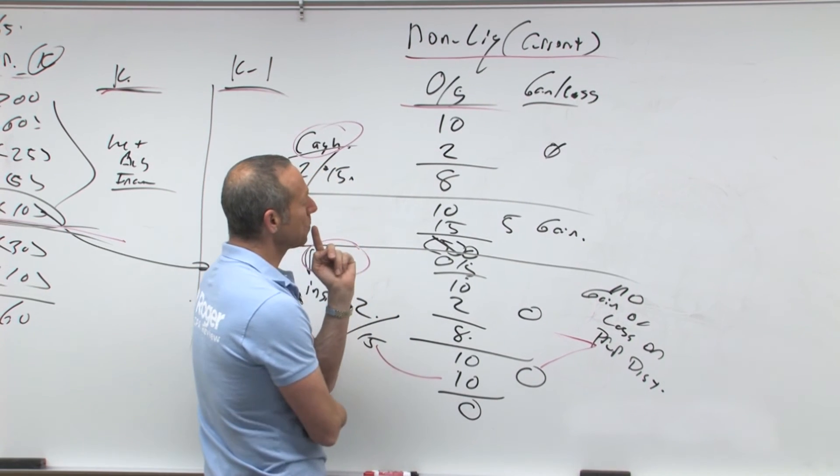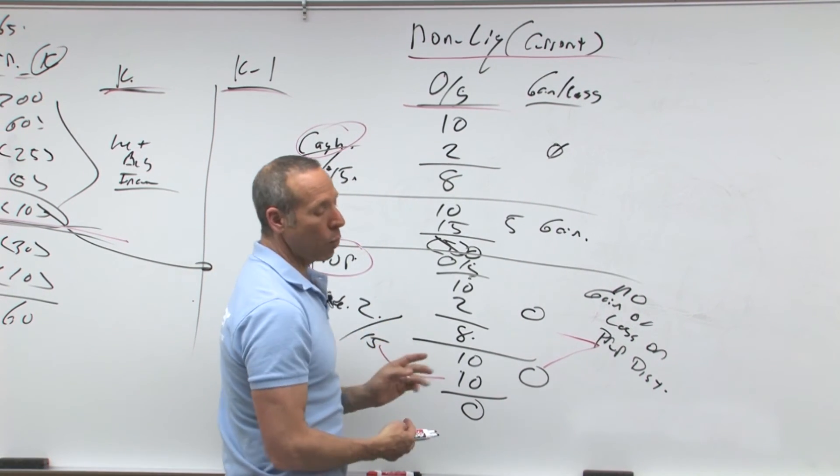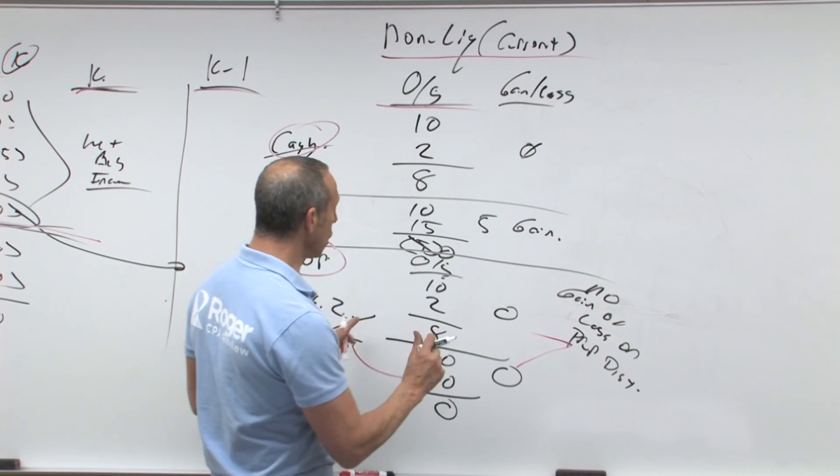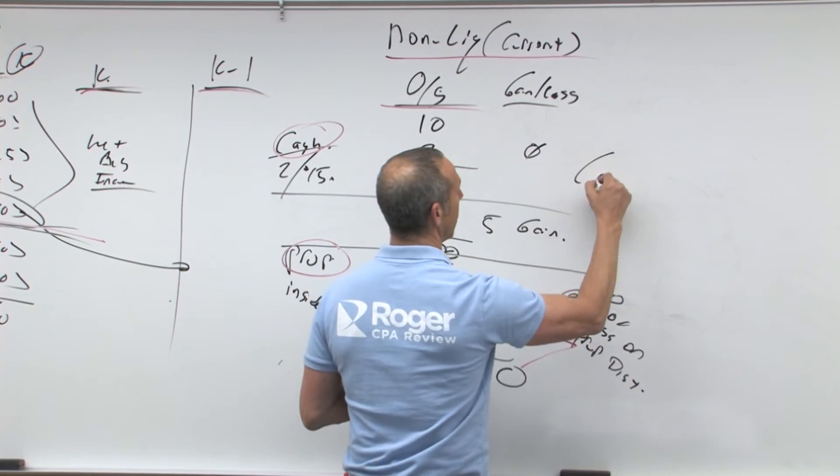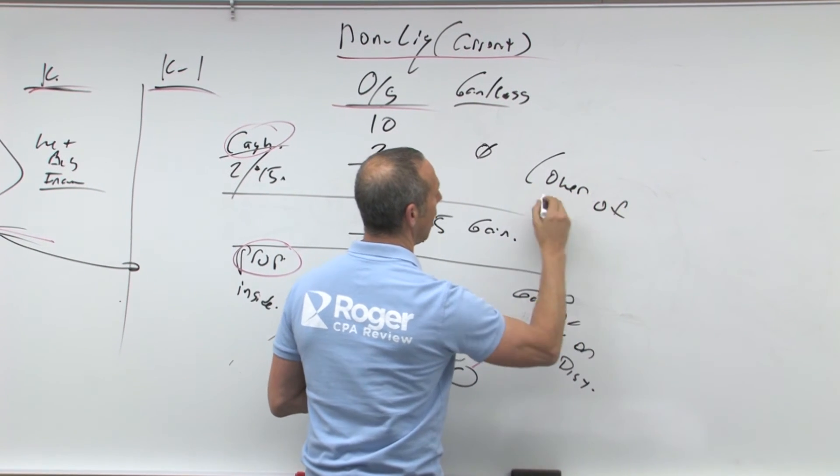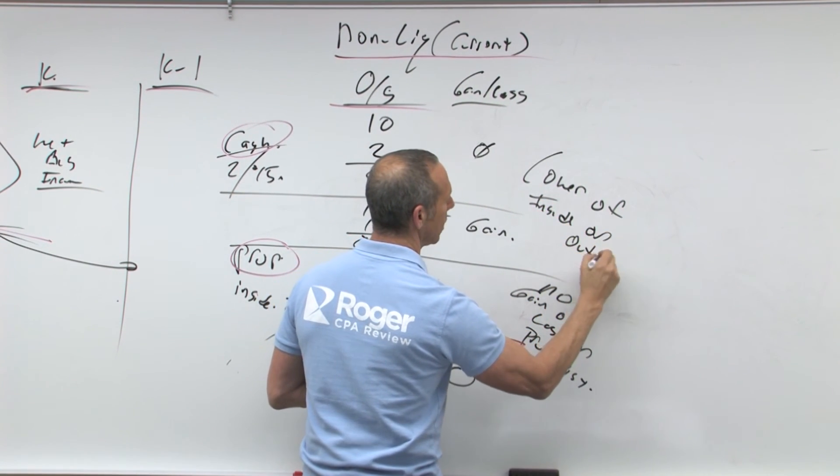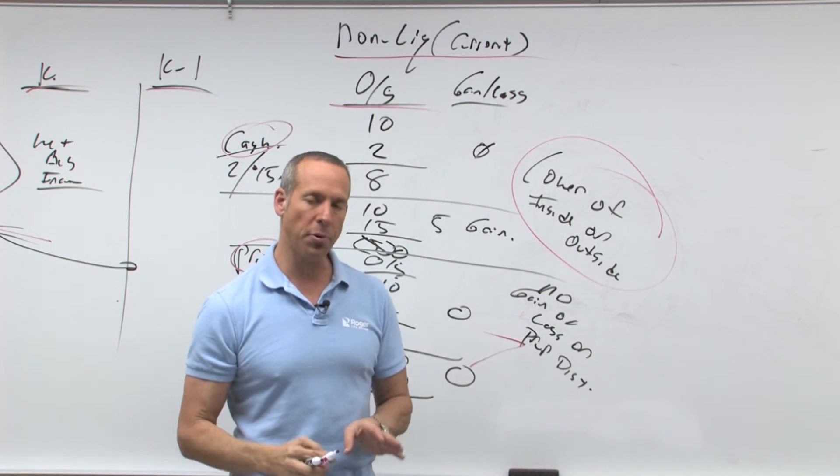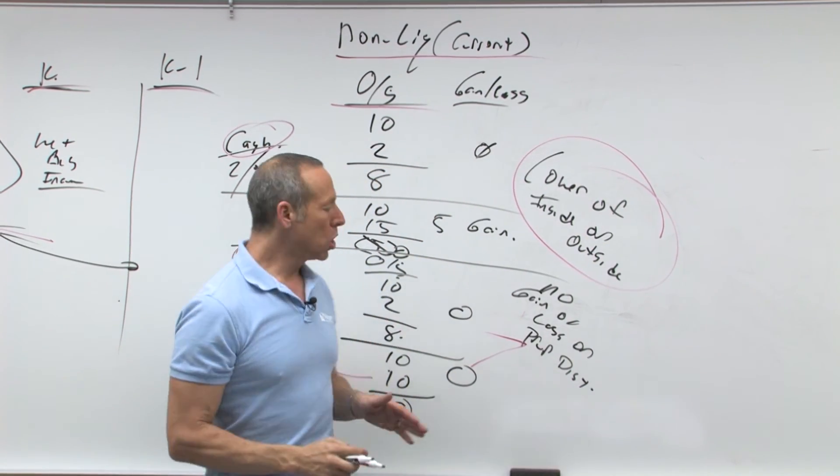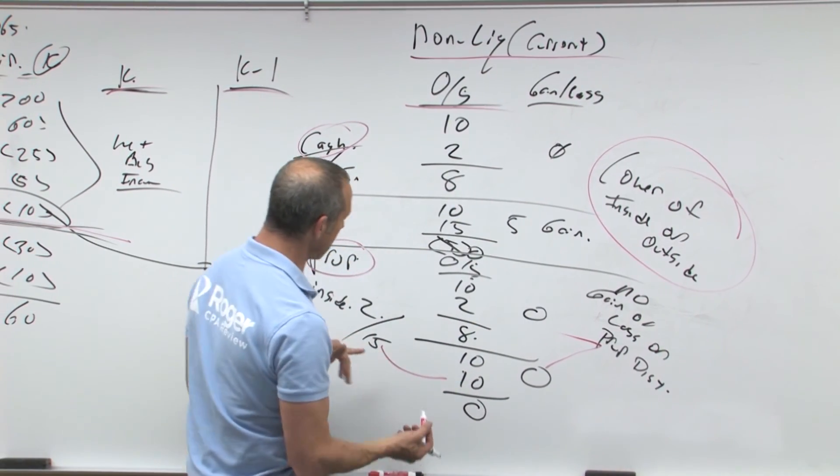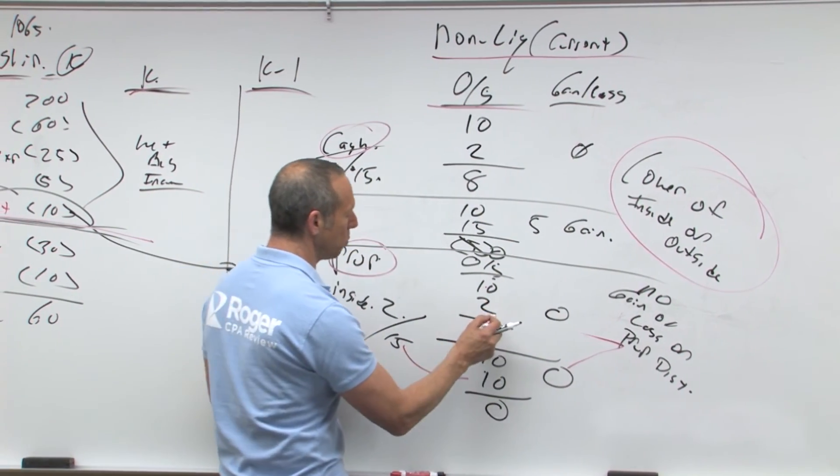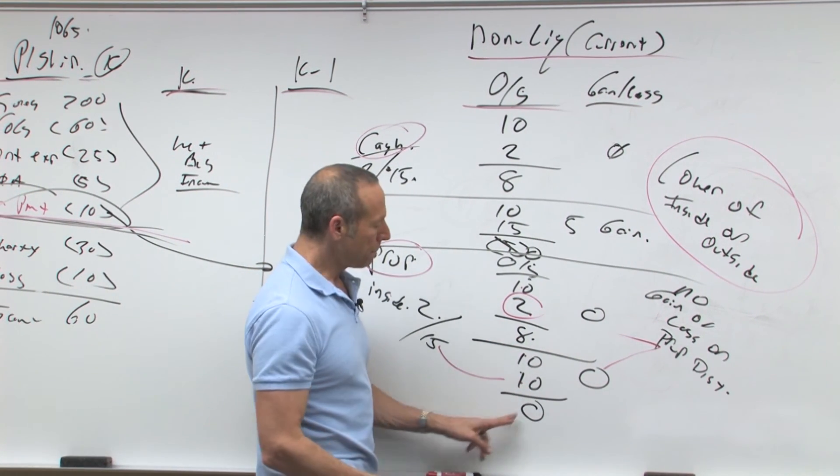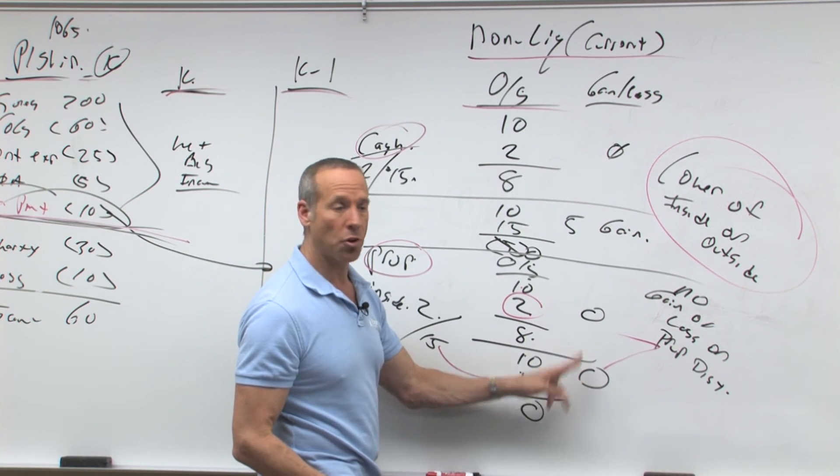So then what does that mean? It really means that when we're looking at this side, we're going to pick it up at the lower of inside or outside. Lower of inside or outside. So when we're getting this property distribution, remember you always pick it up for the lower of inside or outside. What's lower? $2 or $10? $2. Pick it up at $2. What's lower? $10 or $15? Pick it up at $10.